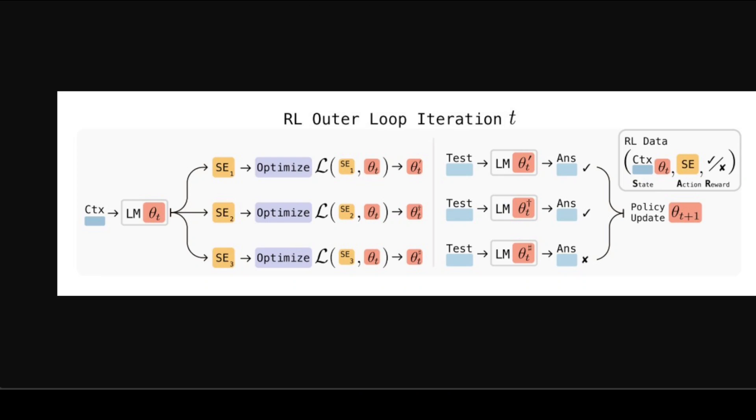Now let's look at how SEAL actually works. The system has two nested loops - think of it as a learning to learn approach. In the outer reinforcement learning loop, the model generates what the authors call self-edits. These are natural language instructions that specify both the training data and how to use it. For example, a self-edit might say 'create implications from this passage' or 'use these specific optimization settings.'